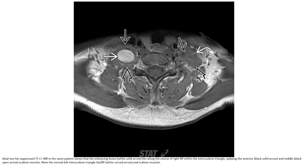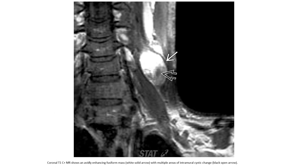The C7 nerve root in the paravertebral space is demonstrated. On T1 with contrast, there is a vividly enhancing fusiform mass with multiple areas of intra-tumoral cystic change.